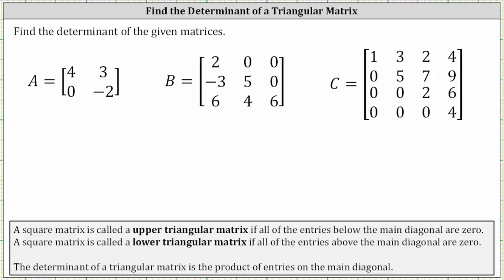The determinant of a triangular matrix is the product of the entries along the main diagonal. Looking at matrix A, here we have the main diagonal.